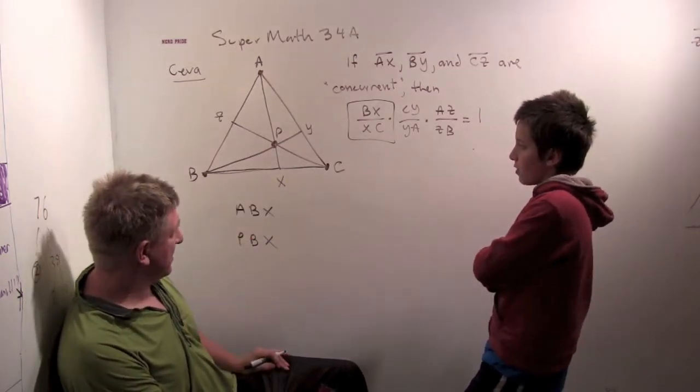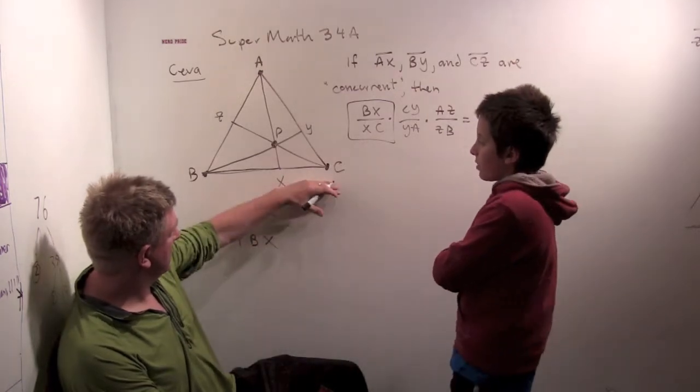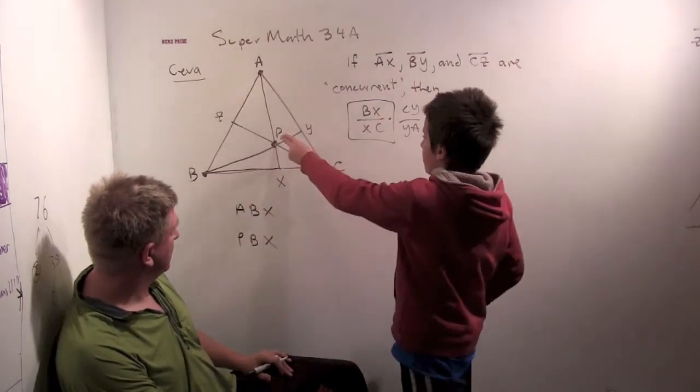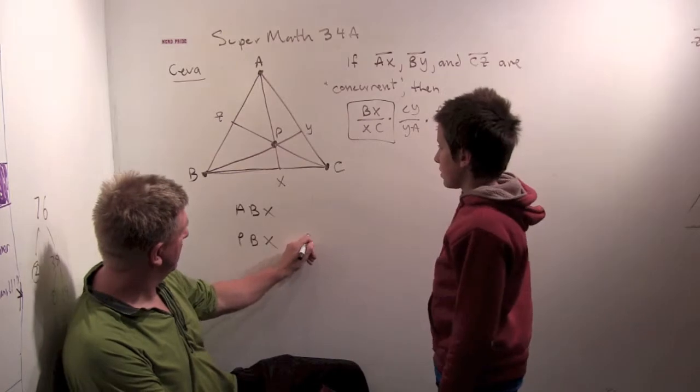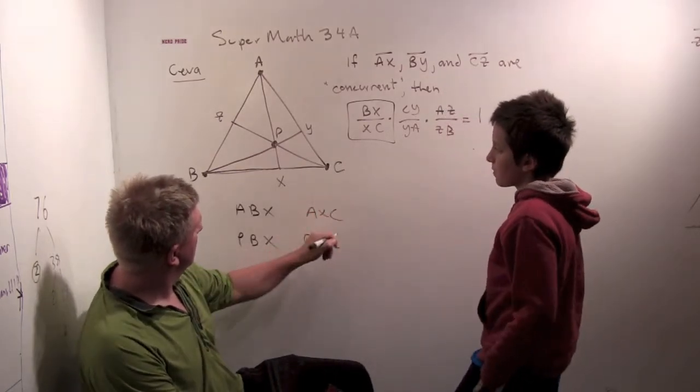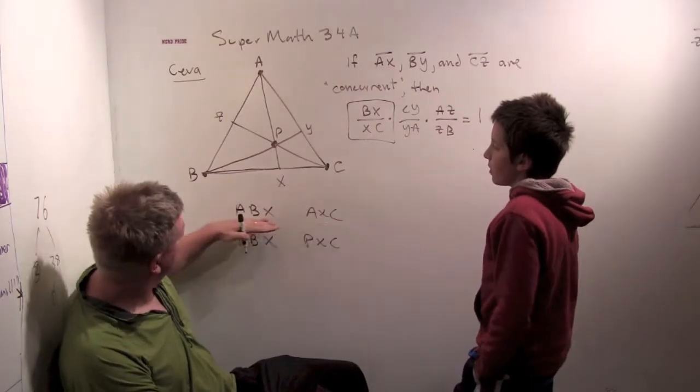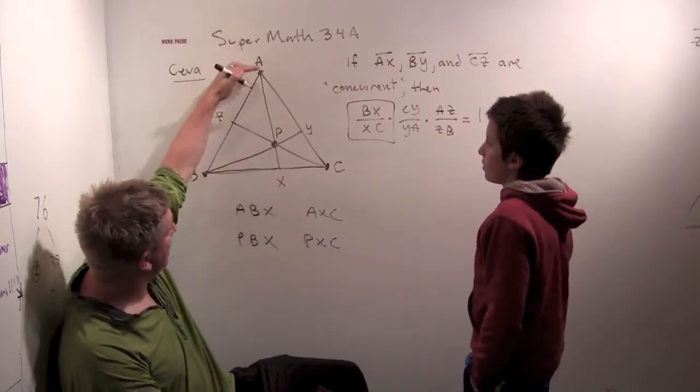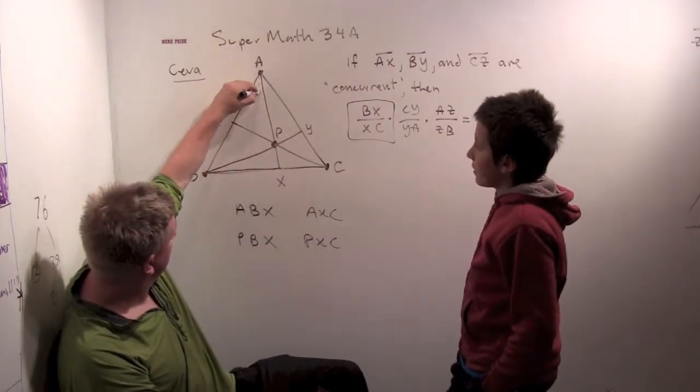And how about XC as the base? Well, you have PXC. PXC. And AXC. Now notice that AXC and ABX have the same height. Yeah. See that? Yeah.